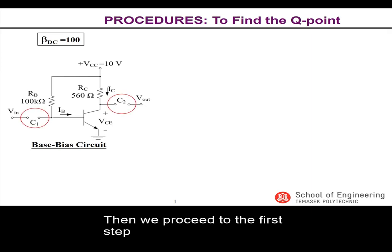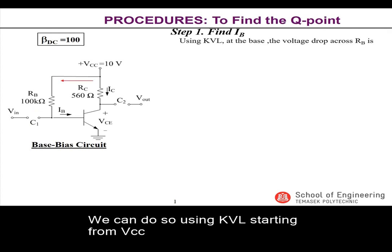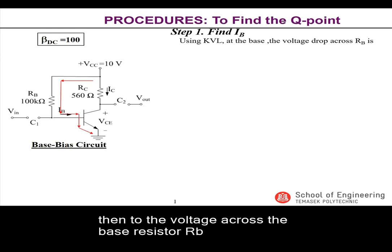Then we proceed to the first step, which is to find the base current IB. We can do so using KVL, starting from VCC, the DC supply, then to the voltage across the base resistor RB, and then the voltage across the BE junction.